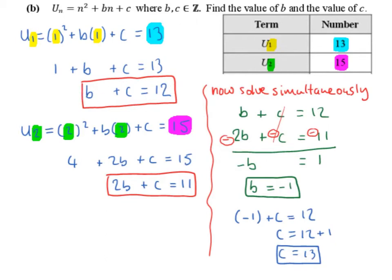Then we let u₂ equal to 15 and do the same, this time swapping the n in our formula for a 2. So u₂ is going to be 2 squared plus b times 2 plus c, equal to 15 because Term 2 is 15. 2 squared is 4, b times 2 is 2b, plus c equals 15, and 15 minus 4 is 11, so 2b plus c equals 11.